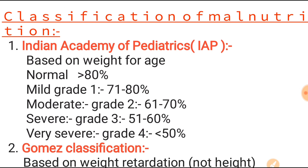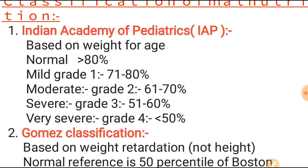The first is the Indian Academy of Pediatrics (IAP) classification, based on weight for age. The normal value is more than 80%. Grade 1 (mild) is 71 to 80%, Grade 2 (moderate) is 61 to 70%, Grade 3 (severe) is 51 to 60%, and Grade 4 (very severe) is less than 50%.